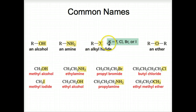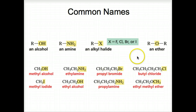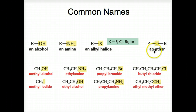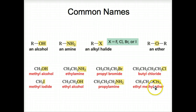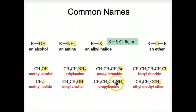An alkyl halide — X refers to a halogen: fluorine, chlorine, bromine, or iodine — bonded to an alkyl group, like propyl bromide. An ether has a structure of an oxygen between two R groups or two alkyl groups; an example is ethyl methyl ether. Here's the methyl; here's the ethyl — this is a common name. Here's propylamine: it's an amine with a three-carbon propyl group bonded to the amine group. Ethyl alcohol is the most commonly encountered alcohol from ingestion.